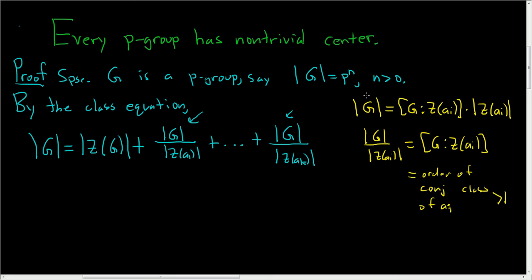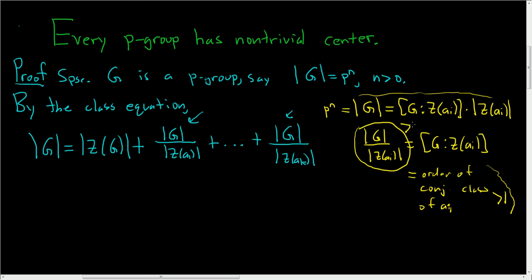This tells us that the index is a divisor of the order of G, which is p to the n. And from the class equation we know the index is a number greater than 1. So it's bigger than 1 and it divides p to the n, which means it must be a power of the prime p.